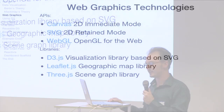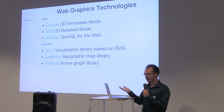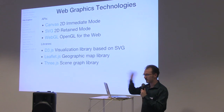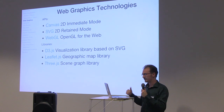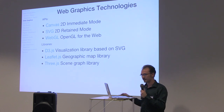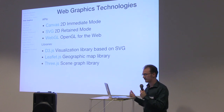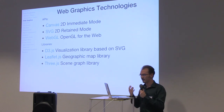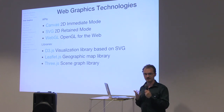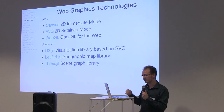Given these theories, how can we implement data visualizations? This contextualizes D3 as well. With web graphics, there are three main technologies: Canvas, which is immediate mode where you issue commands to draw shapes on screen; SVG, which is retained mode where you add things to a collection of graphical objects; and WebGL, which is a binding for OpenGL for the web. Built on top of these is D3, which is becoming the most widely used visualization library. There's also Leaflet.js for geographic maps and Three.js for 3D graphics.